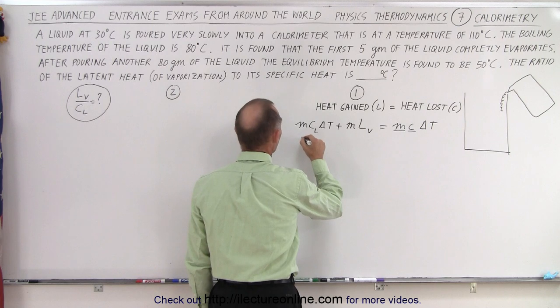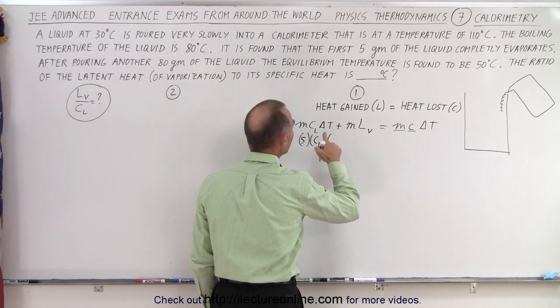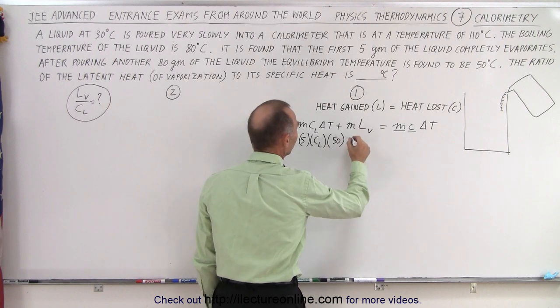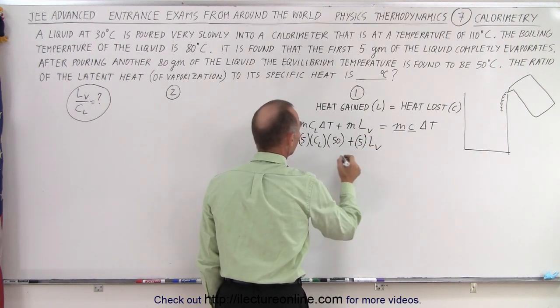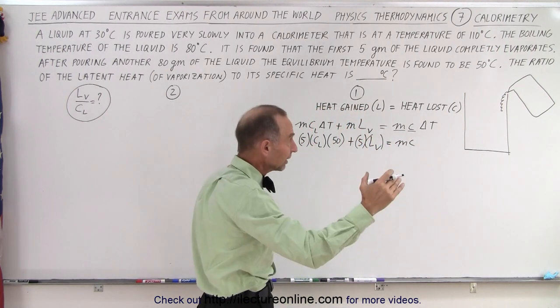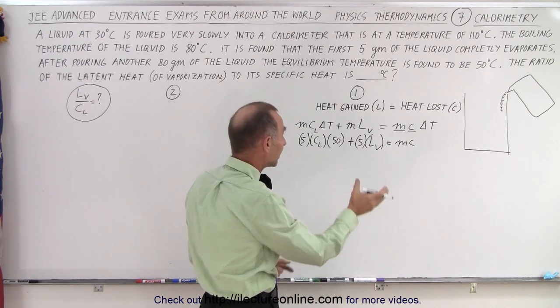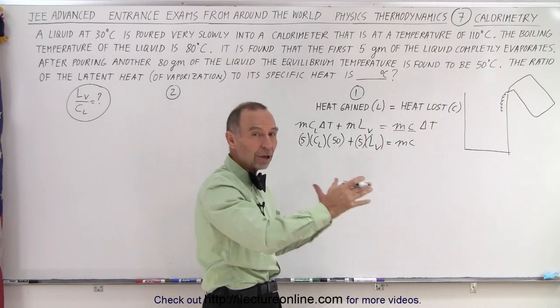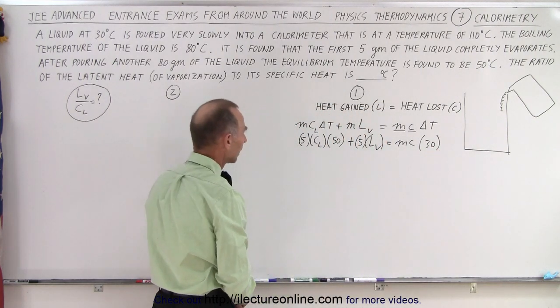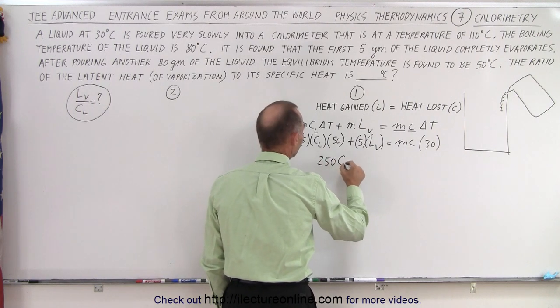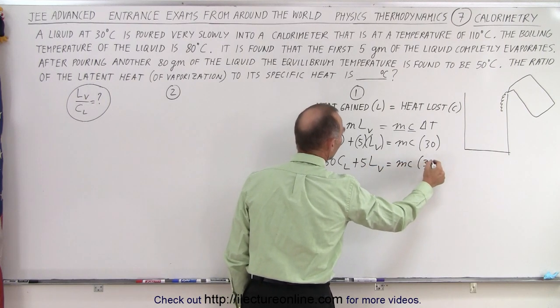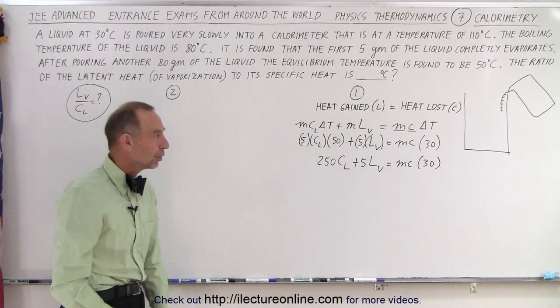So the mass is 5 grams. C of the liquid is unknown. The delta T, well we go from 30 to 80, so that would be 50, plus the mass 5 times latent heat of vaporization. Notice those are the two unknowns. Is equal to MC times delta T. Now the temperature there goes from 110 down to 80. That's a minus 30 degrees. But the way we write it here, heat gained equals heat lost. Both sides of it must be positive. So that's a positive 30 degrees. We take the absolute value of the change. Cleaning that up a little bit, we get 250C specific heat of the liquid plus 5 times the latent heat of vaporization equals MC times 30. All right, that's as far as we can go with the first part of the problem.